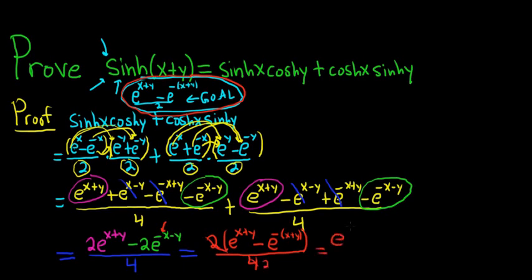So we end up with e^(x+y) minus e^(-x+y) all being divided by 2. This is precisely the definition of the hyperbolic sine function. This is sinh(x+y).